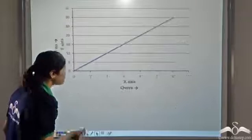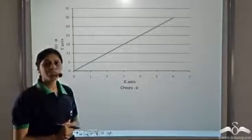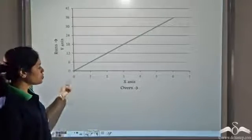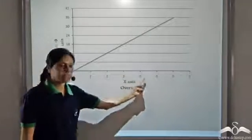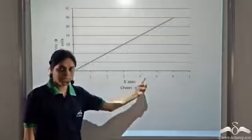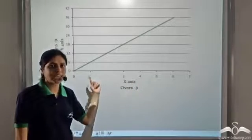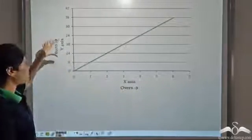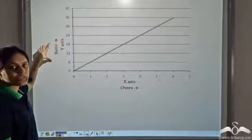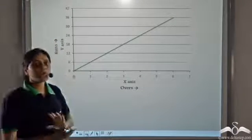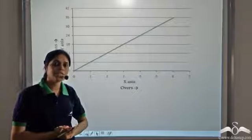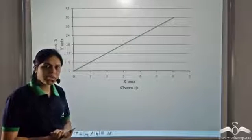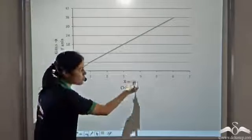Now let us plot the runs scored by one of these teams in different overs. Here on the x-axis — this horizontal axis — we plot the overs, and on the y-axis we plot the runs. Now what if we want to calculate the run rate of this team at any point, say after the fourth over?